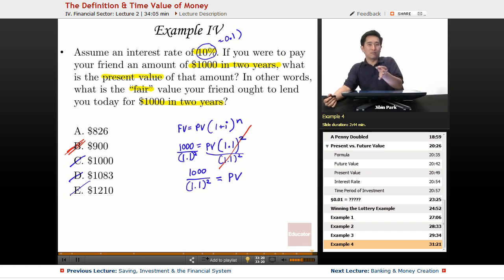By process of elimination, you get $826, which is correct. If you do $826 times 1.1 squared, you'll get $1000.